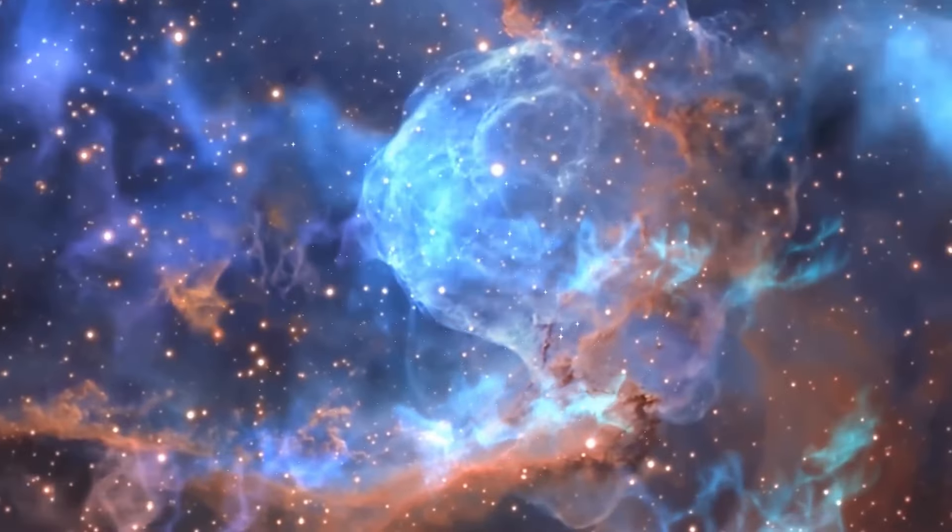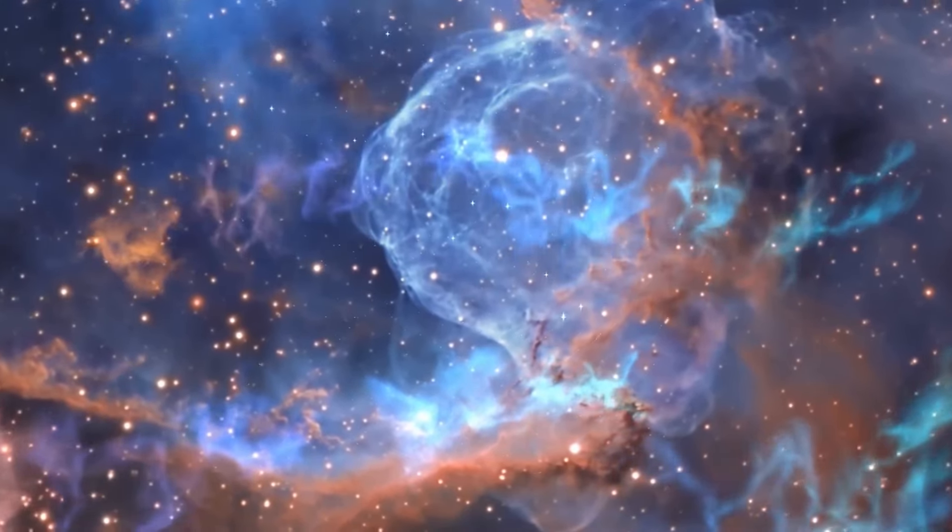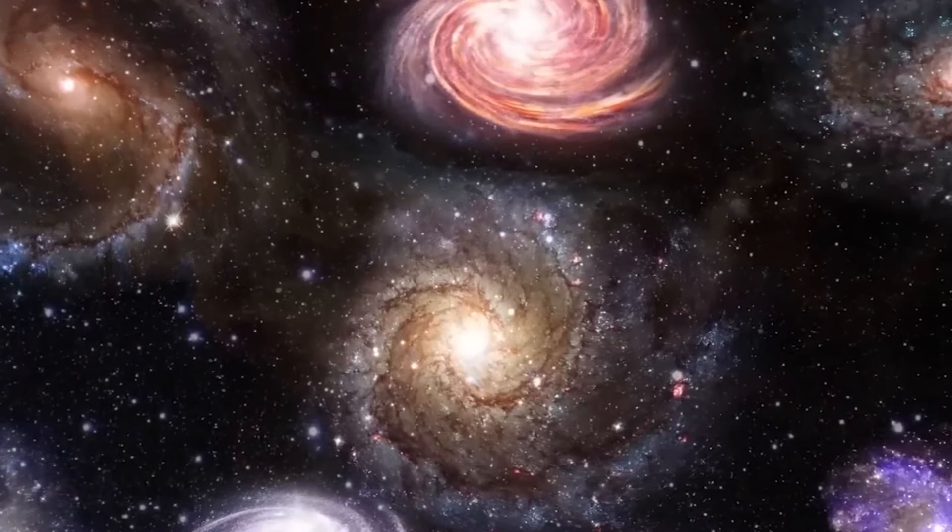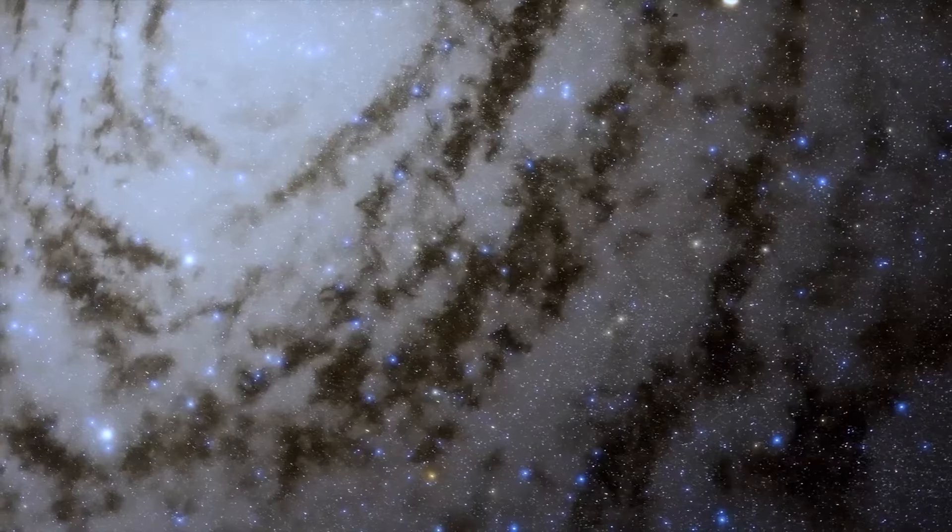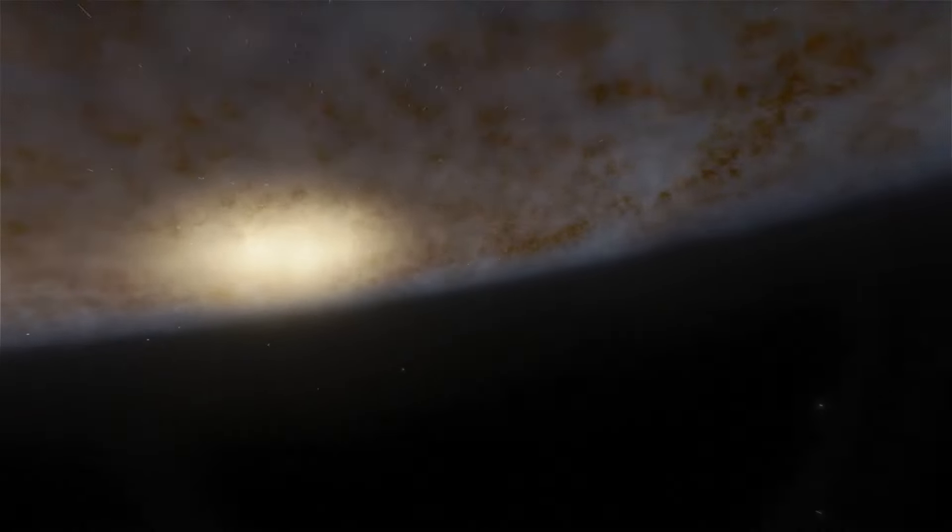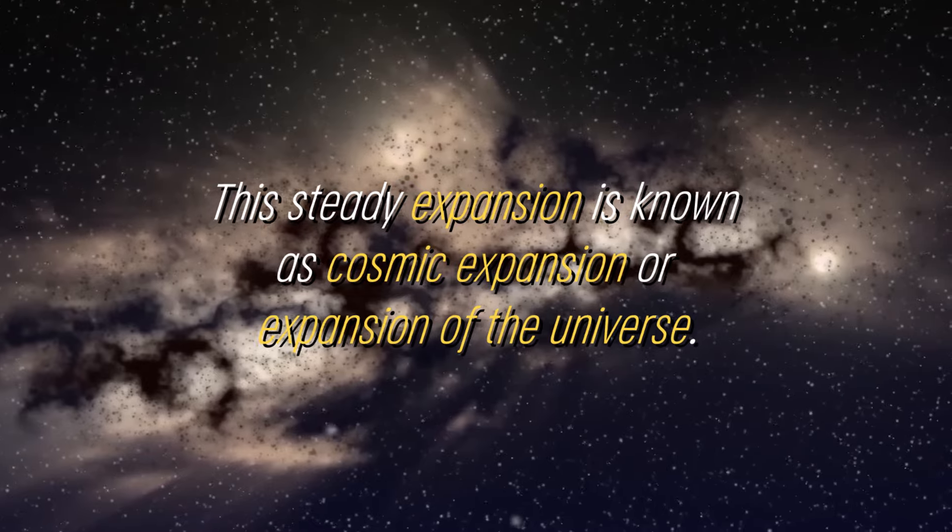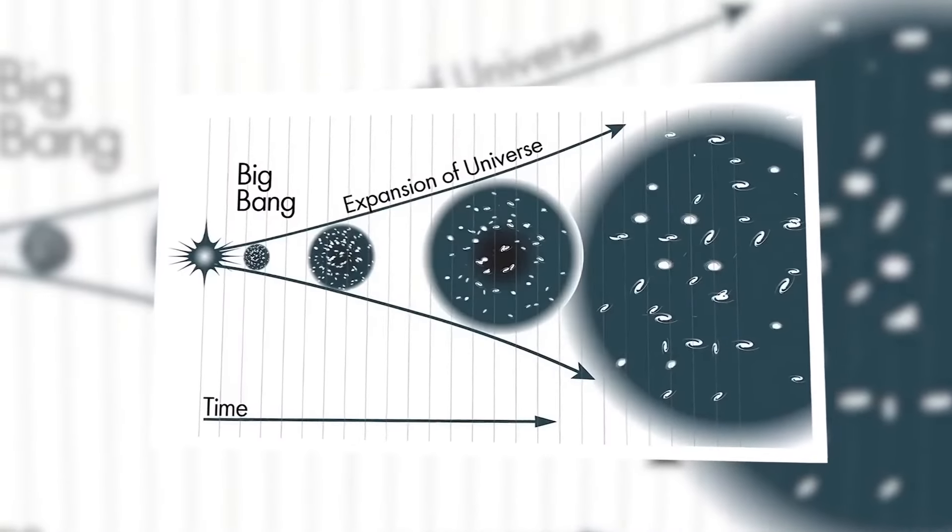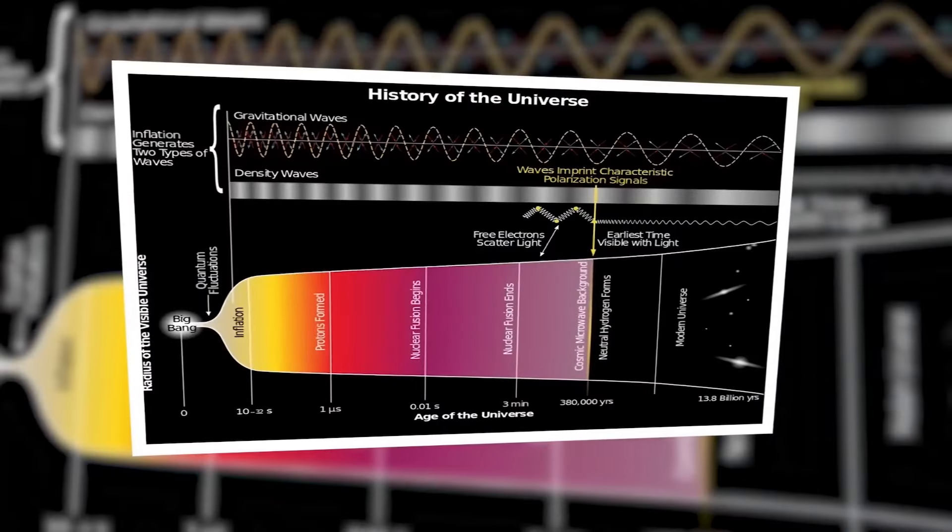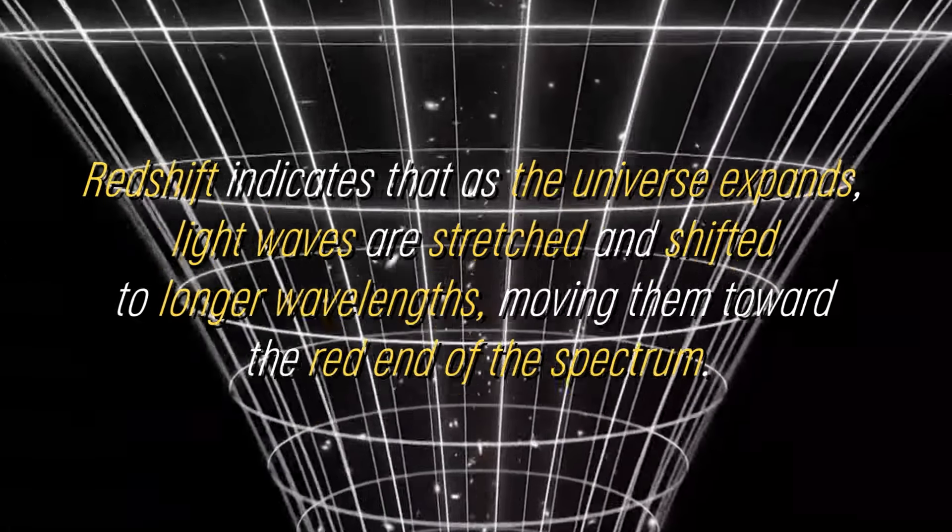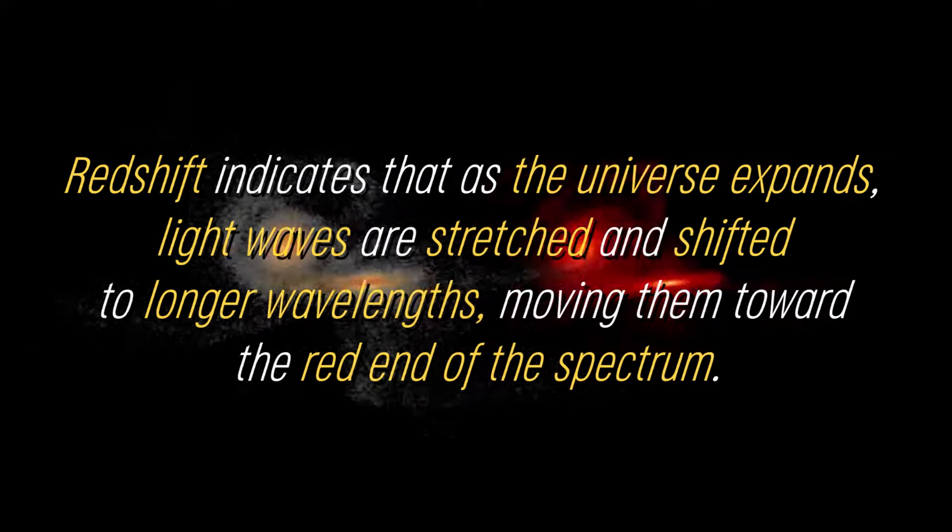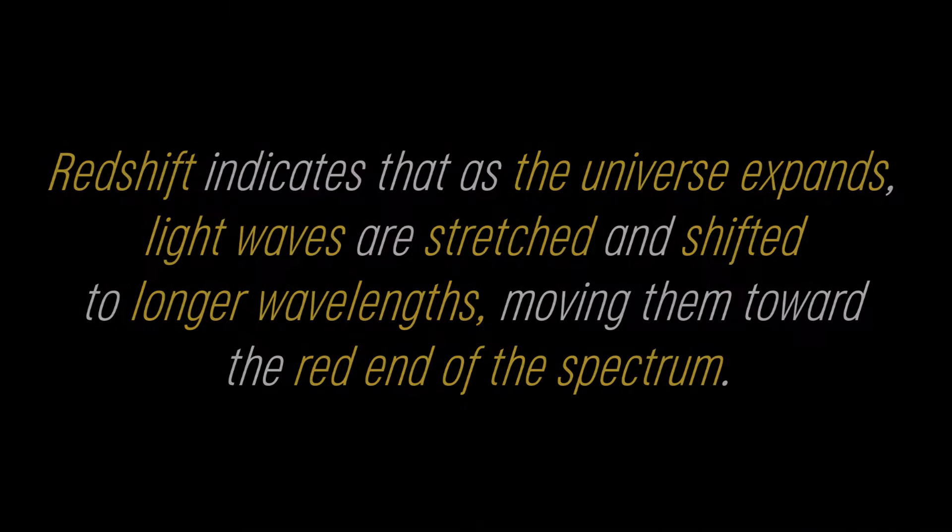Cosmic inflation played a massive role in the formation of the large-scale structure of the universe. It smoothed out irregularities, homogenized the distribution of matter and energy, and paved the way for the subsequent formation of galaxies, stars, and other cosmic structures. As the universe continued to expand, the rate of expansion gradually slowed. It is important to note that although there was rapid cosmic inflation in the initial period, the universe continued to expand at a measurable rate. This steady expansion is known as cosmic expansion. Scientists have observed the effects of this expansion through various observations, such as the redshift of light from distant galaxies. Redshift indicates that as the universe expands, light waves are stretched and shifted to longer wavelengths, moving them toward the red end of the spectrum.